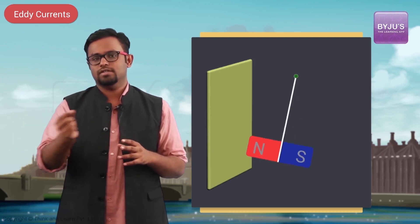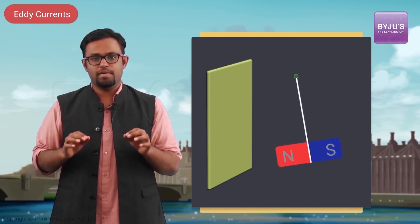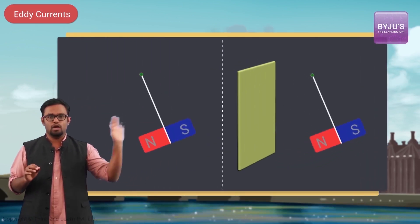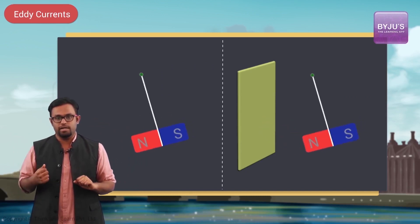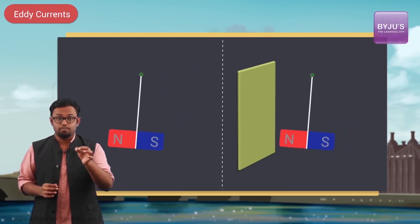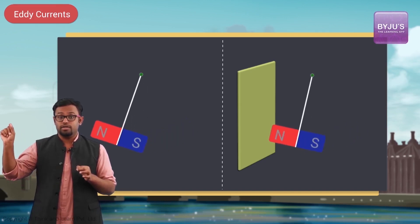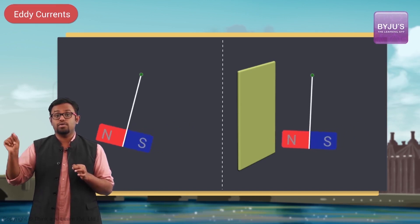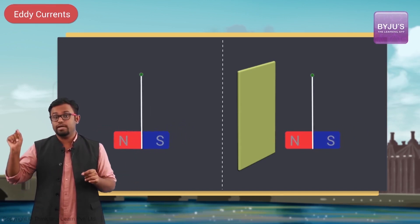In this experiment, you have a magnet pendulum without any iron plate and a magnet pendulum with an iron plate, and both are given the same amplitude and released. It is seen that the magnet pendulum placed next to an iron plate damps down really fast compared to the other one, which keeps oscillating while the one near the plate damps quickly.